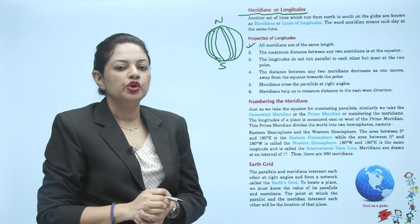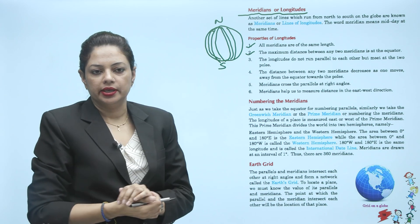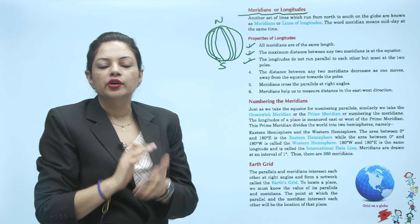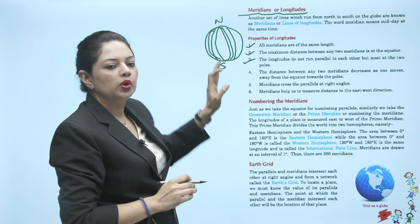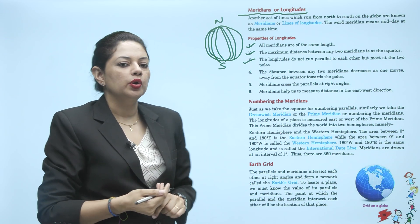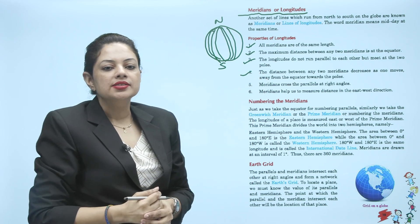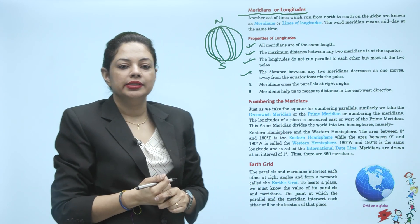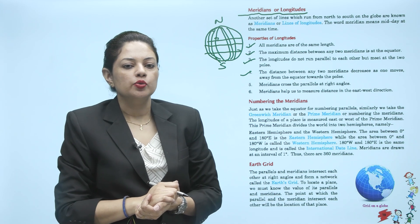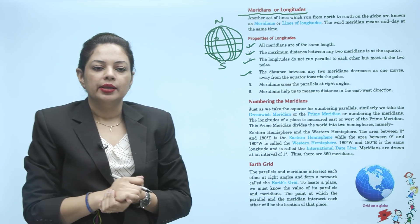Second, the maximum distance between any two meridians is at the equator. Next, the longitudes do not run parallel to each other but meet at the two poles — यह north और south pole पर आपस में मिल जाती हैं. The distance between any two meridians decreases as one moves away from the equator toward the pole. Fifth, meridians cross the parallels at right angles. Sixth, meridians help us to measure distance in the east-west direction.